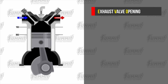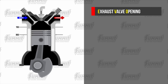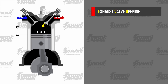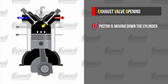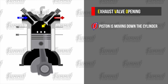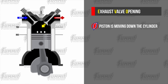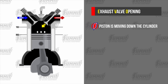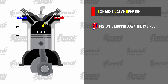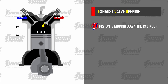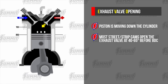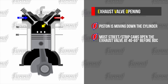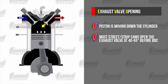First, we'll go over exhaust valve opening. At this point on the power stroke, the piston is over halfway down the cylinder. There is little positive pressure on the piston left to create horsepower, so we crack the exhaust valve open at roughly 60 degrees before bottom dead center in this example. Most street strip cams start to open at 40 to 65 degrees at 50 thousandths before bottom dead center.